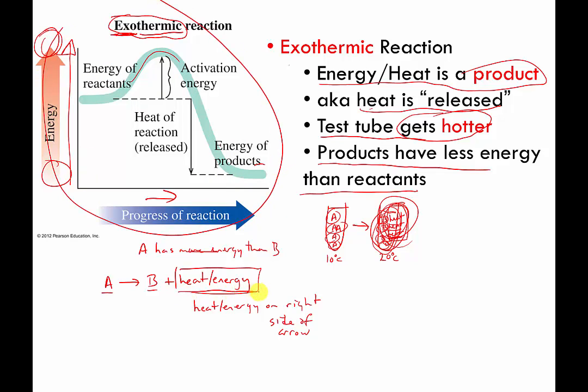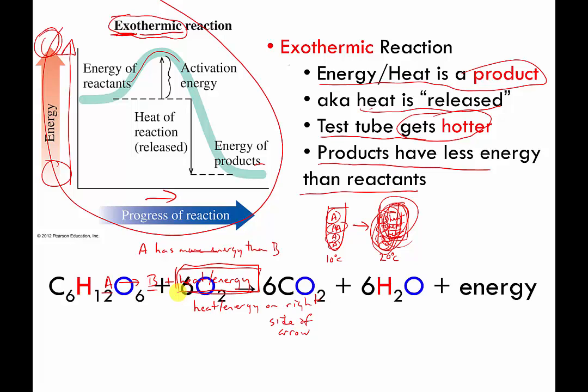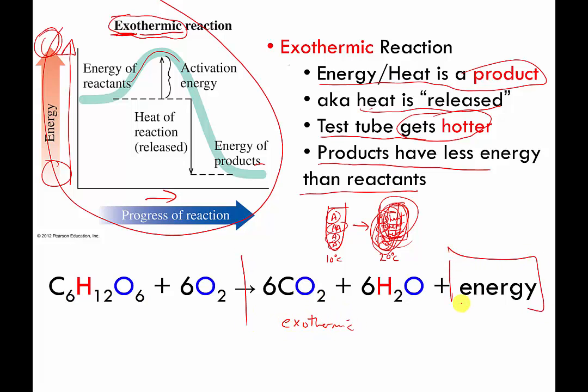An exothermic reaction has heat or energy on the right side of the equation. If there's an exothermic reaction that releases heat, there's got to be another type of reaction that uses up heat. And before we get there, this is an example of an exothermic reaction. Because here's our arrow and here's energy on the right side. I just showed you in an earlier video that I said this is called respiration. And I said respiration is a combustion reaction.